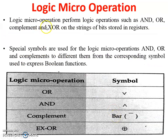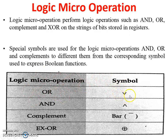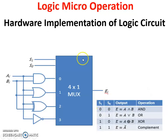There are mainly four logic micro operations: AND, OR, complement, and XOR. These are the special symbols used for logic micro operations. This is the symbol for OR, this is the symbol for AND (bar or dash), and this is the XOR symbol. Now this is the hardware implementation of the logic circuit.